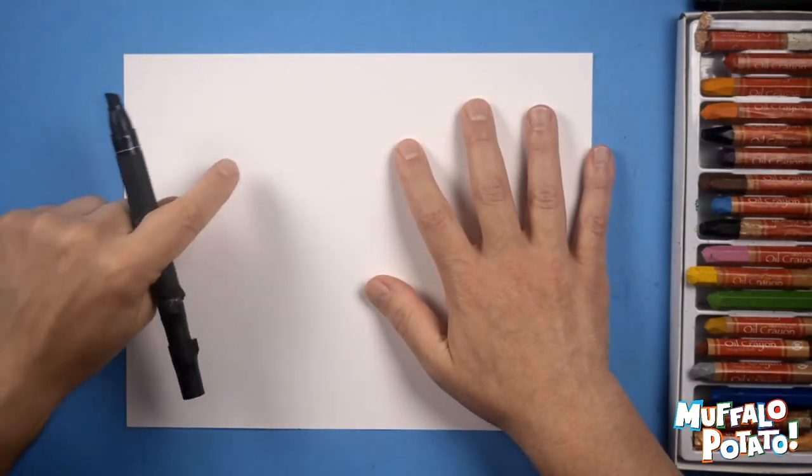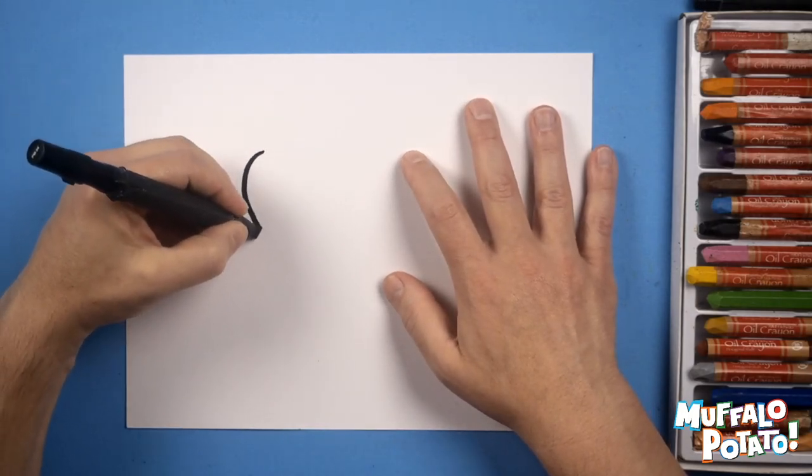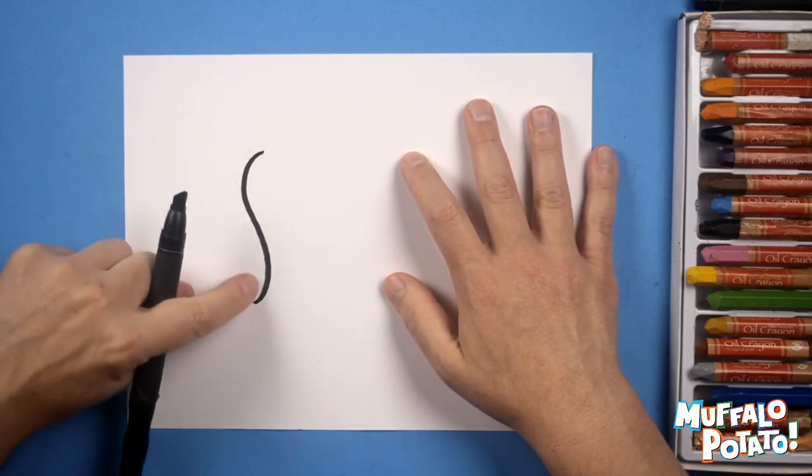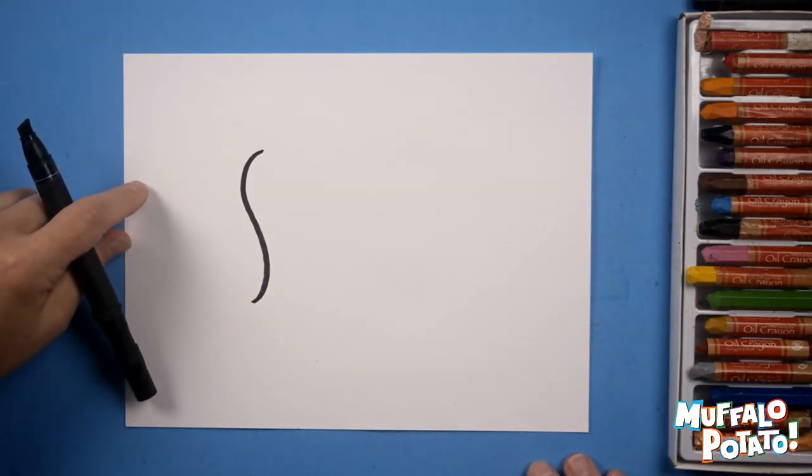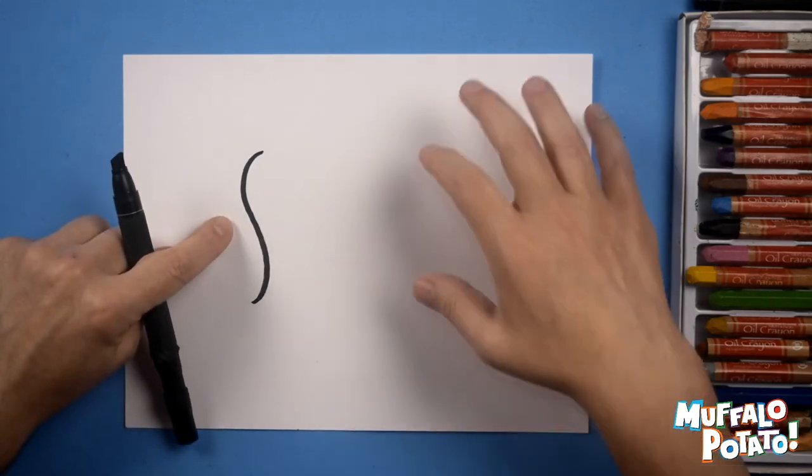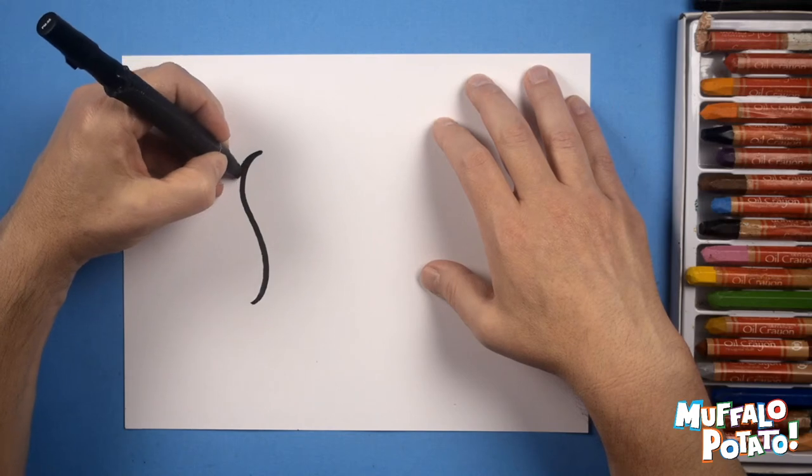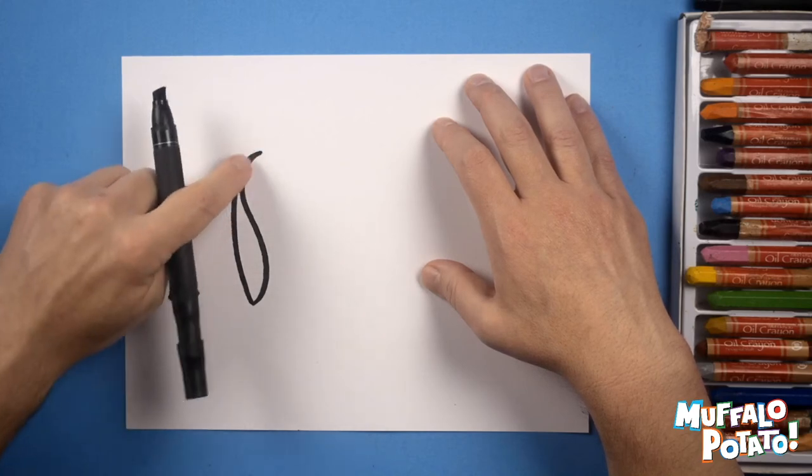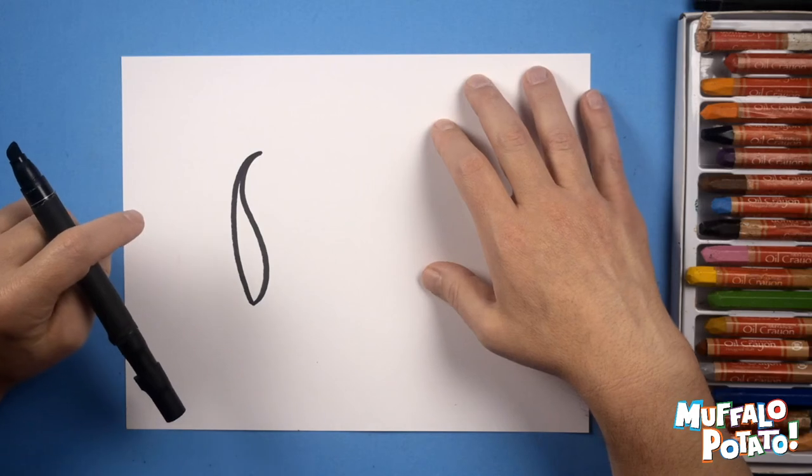The first thing we want to draw is a skinny S close to the top, just like this. Just a skinny S. Not a big curve. Once you've got that S drawn, I want you to draw a skinny C and close off that shape. Put your pen right where the top of that S is, go around. It's just a very skinny C coming around like this, closes off the shape. This is gonna be the brim of his police hat that he wears.